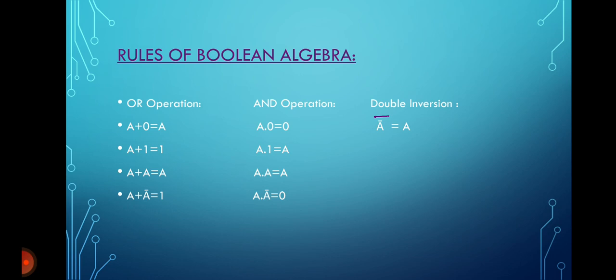Now let's see the rules of Boolean algebra. The first set is OR laws, which use the OR operation. The first OR law is: A plus 0 equals A. That is, when input A is OR-ed with 0, we get the output equal to the input, which is A.